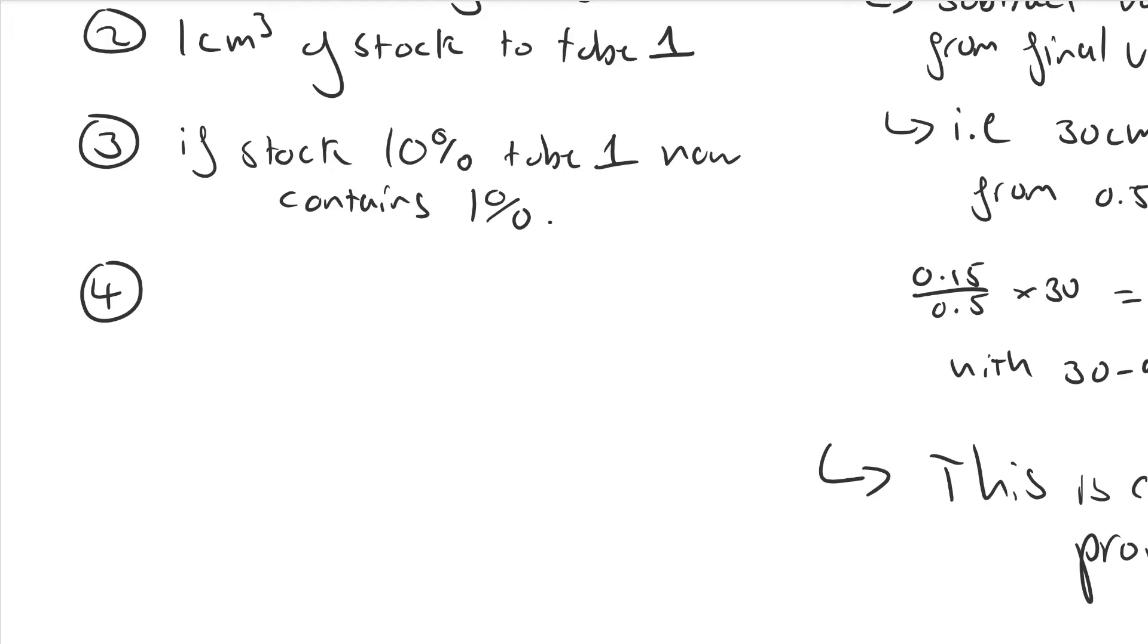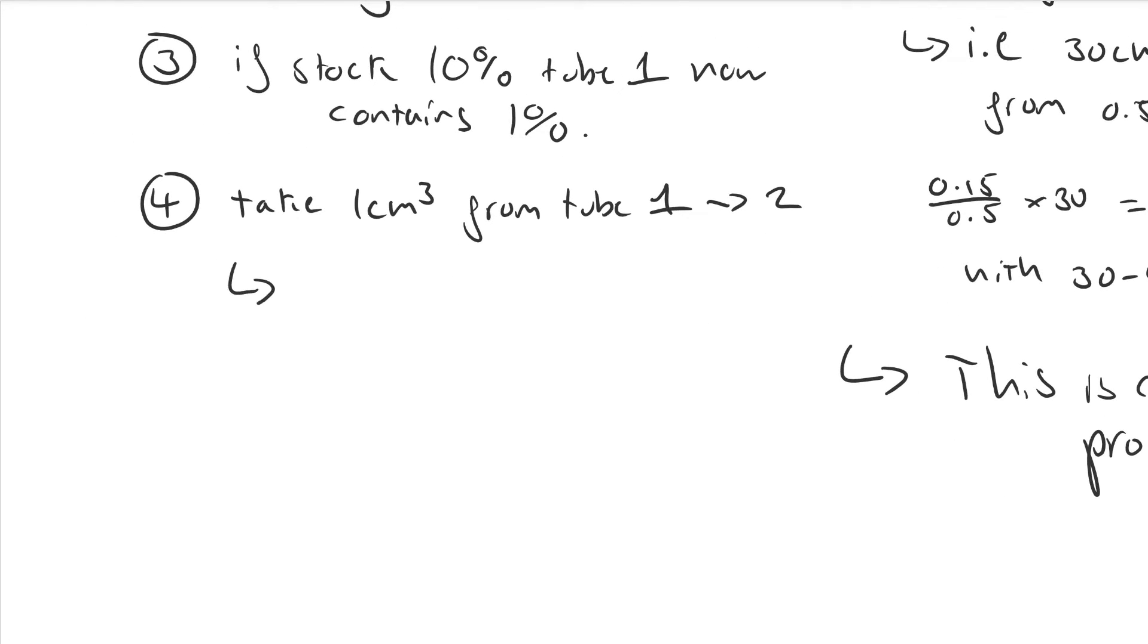Then do step 4, where you transfer 1cm³ from tube 1 to tube 2 and mix it. Now tube 2 contains 0.1% solution, because it's diluted by 10 again.